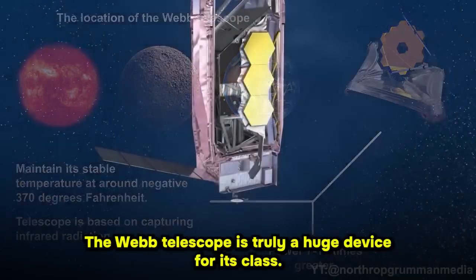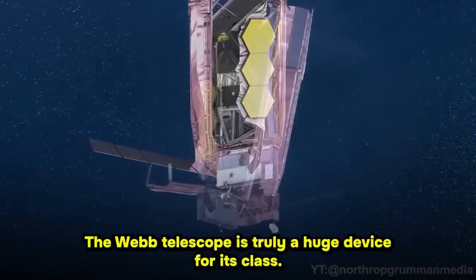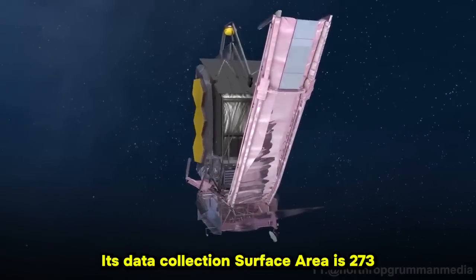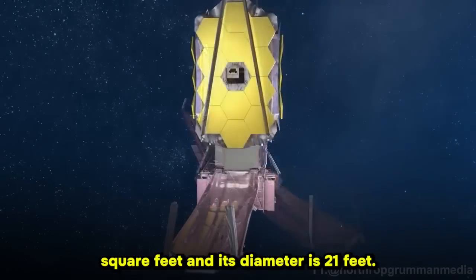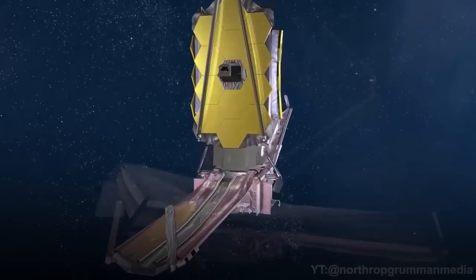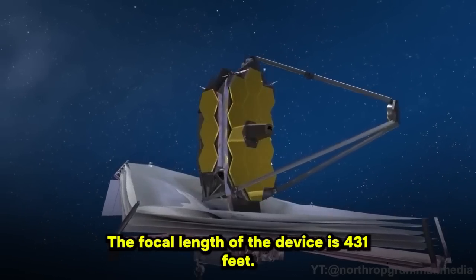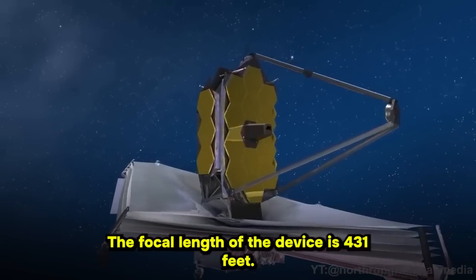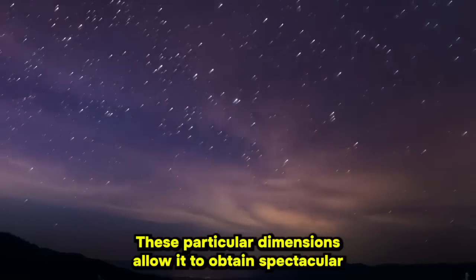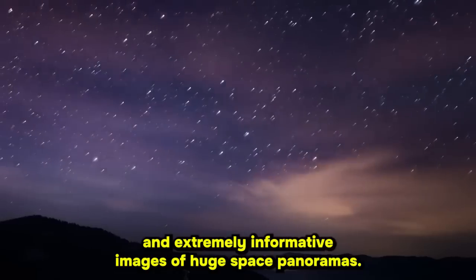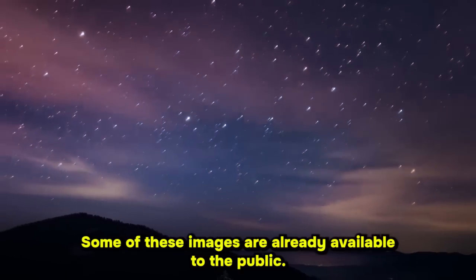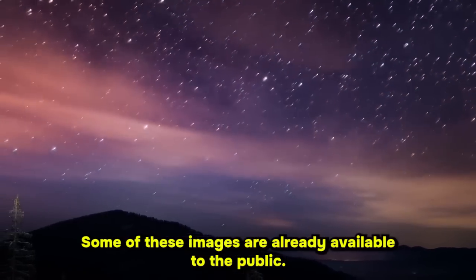The Webb Telescope is truly a huge device for its class. Its data collection surface area is 273 square feet, and its diameter is 21 feet. The focal length of the device is 431 feet. These particular dimensions allow it to obtain spectacular and extremely informative images of huge space panoramas. Some of these images are already available to the public.